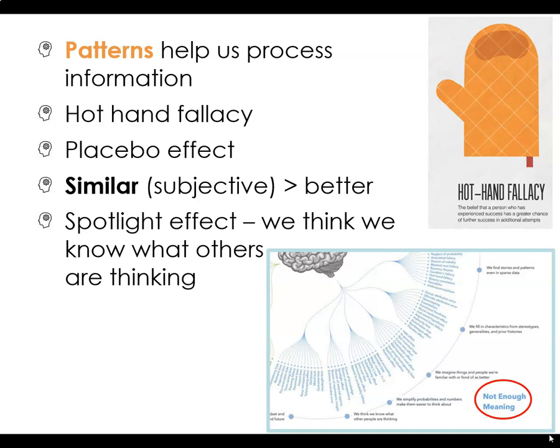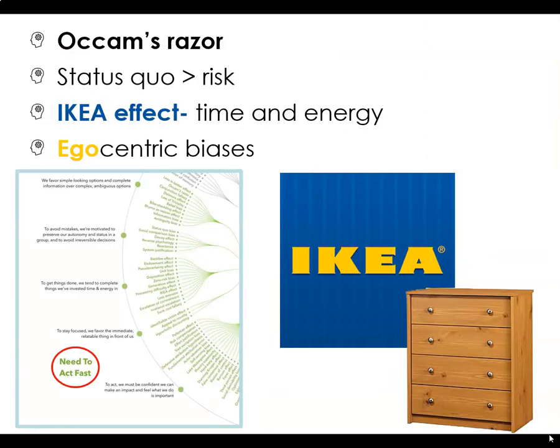Another phenomenon is the spotlight effect, where people tend to think they are noticed more than they really are. Here we have biases where we as humans are making decisions or processing information and need to act fast. In these cases, we usually favor simple-looking options to avoid mistakes, are motivated to preserve our autonomy and status in a group, want to avoid irreversible decisions, and tend to stay focused on the immediate relatable thing right in front of us.